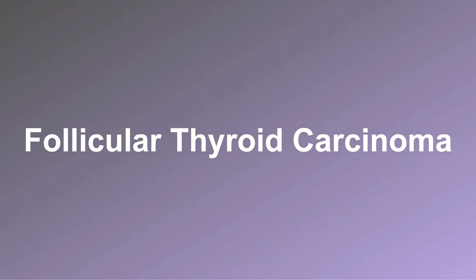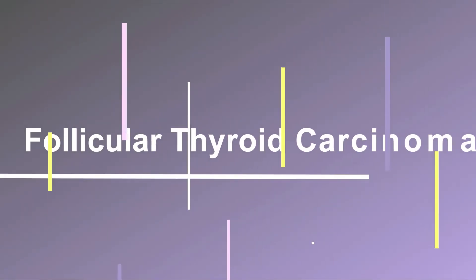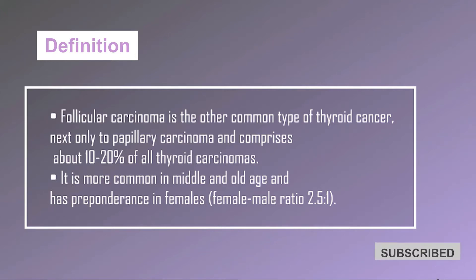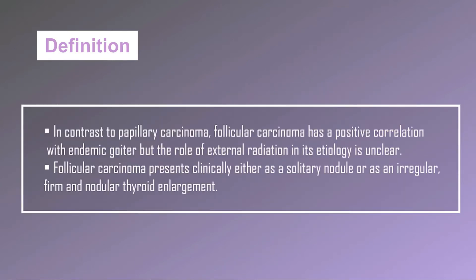Follicular carcinoma is the other common type of thyroid cancer, next only to papillary carcinoma, and comprises about 10 to 20 percent of all thyroid carcinomas. It is more common in middle and old age and has a preponderance in females, with a female-to-male ratio of 2.5 to 1. In contrast to papillary carcinoma, follicular carcinoma has a positive correlation with endemic goiter, but the role of external radiation in its etiology is unclear.